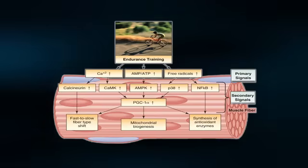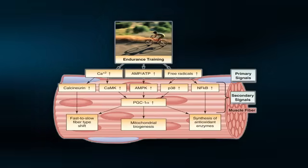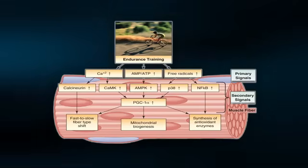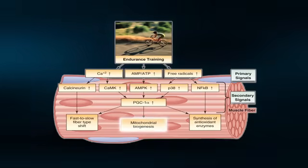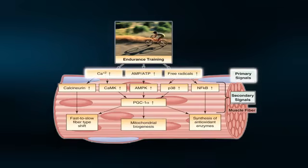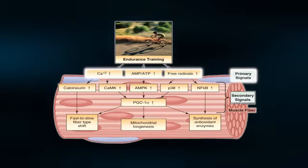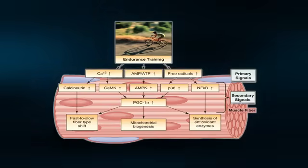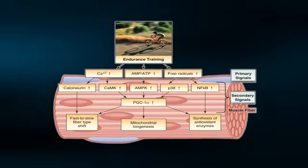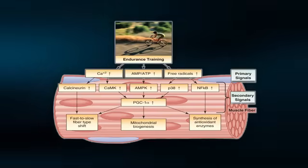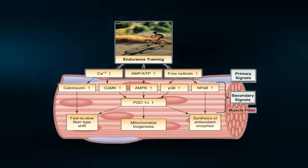An example of the overload principle is shown here. In response to weeks and months of endurance training, a classic chronic adaptation is an increase in mitochondrial number and oxidative capacity in skeletal muscle. The primary signals shown here are activated acutely during exercise. After weeks of being repeatedly activated, chronic adaptations are made in the pathway responsible for mitochondrial biogenesis, thereby increasing their numbers. This is just one example of the many long-term training adaptations elicited from the overload principle.